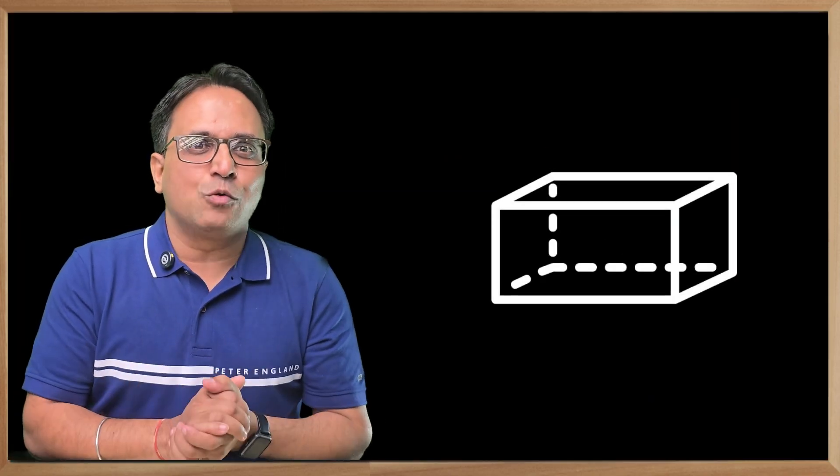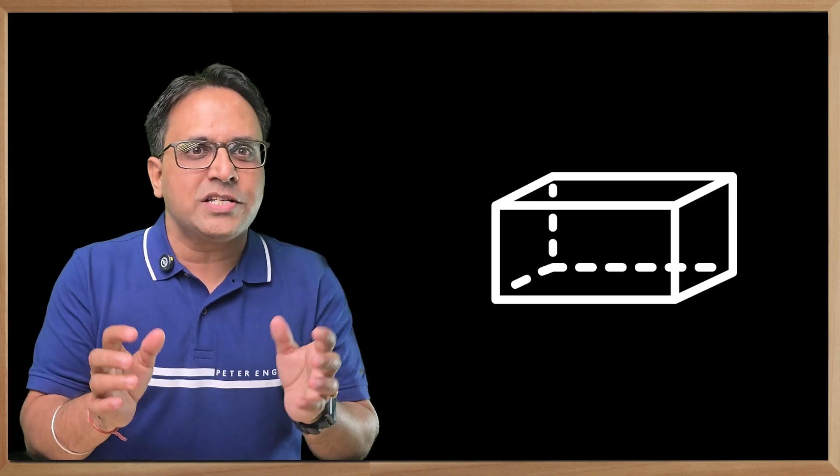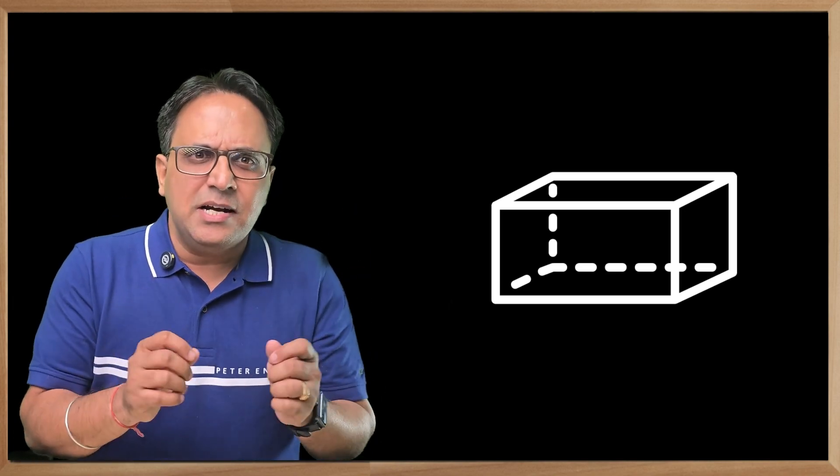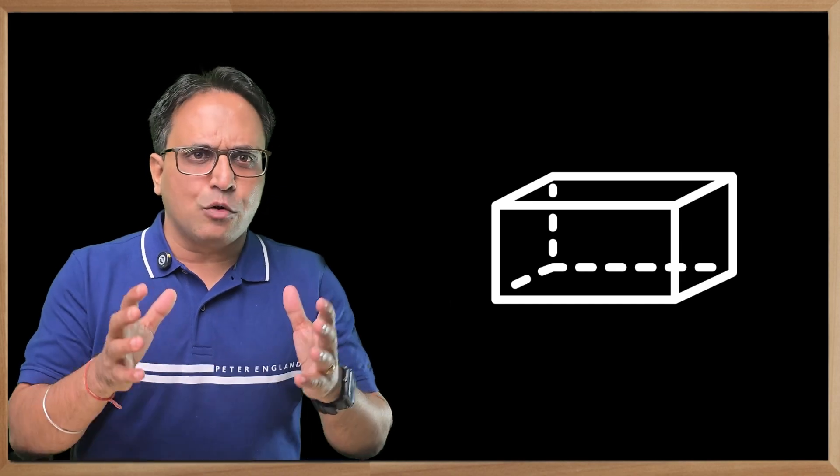When it comes to edges, out of a total of 12 edges, there are four edges of each dimension. Similarly, when it comes to faces, out of a total of six faces, each opposite pair is of the same dimension.